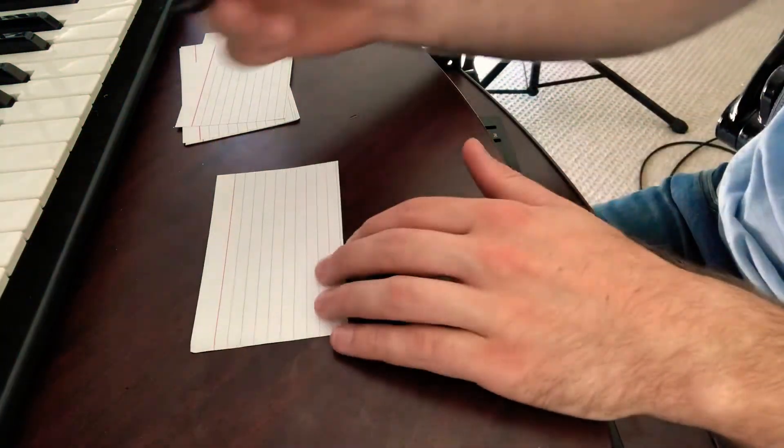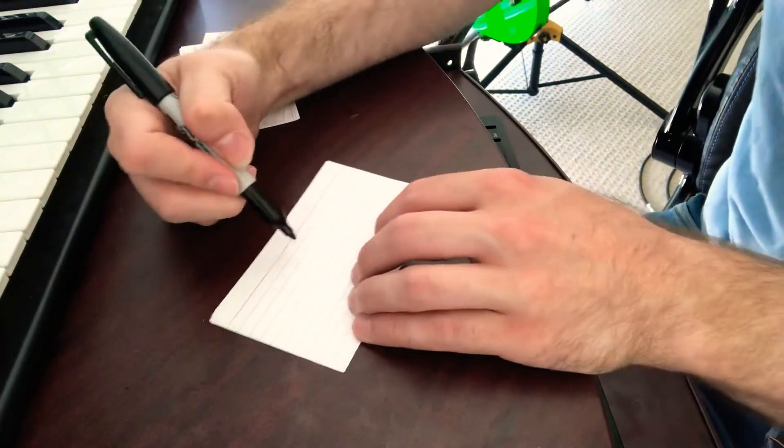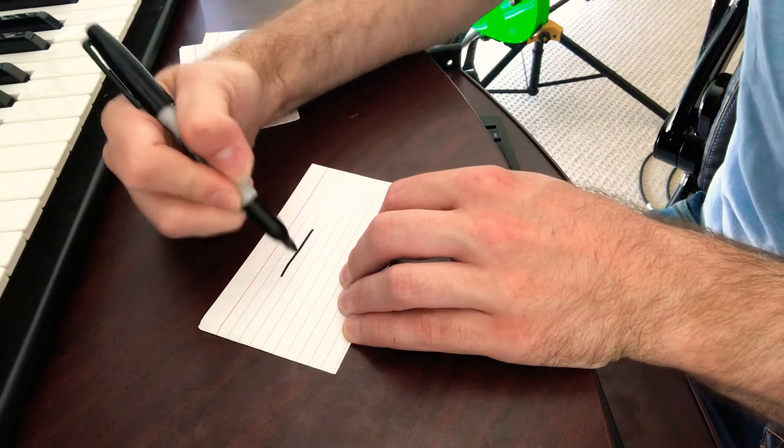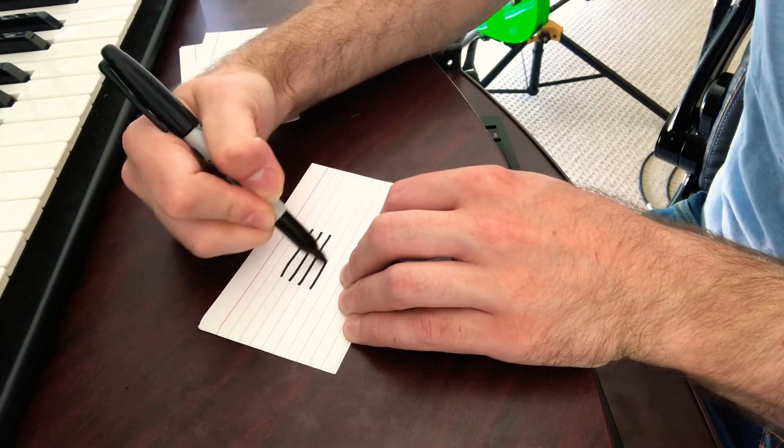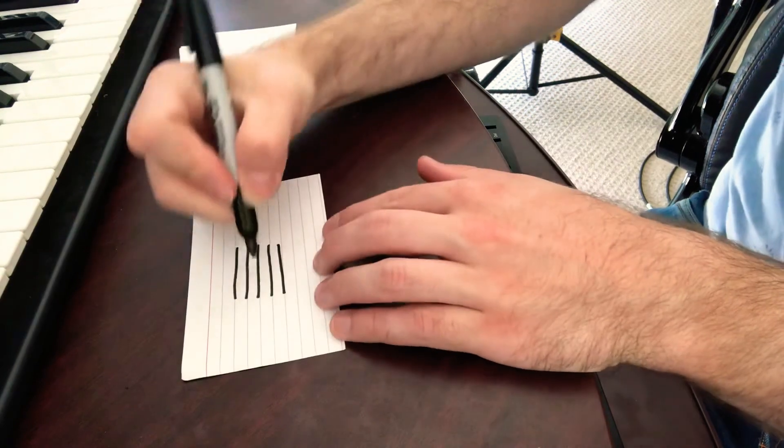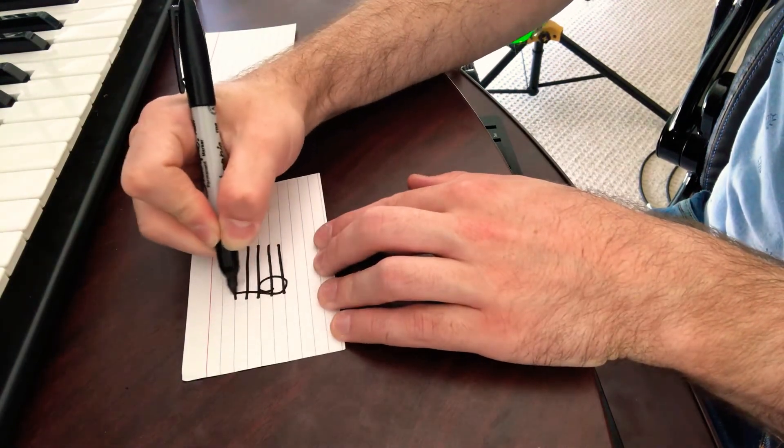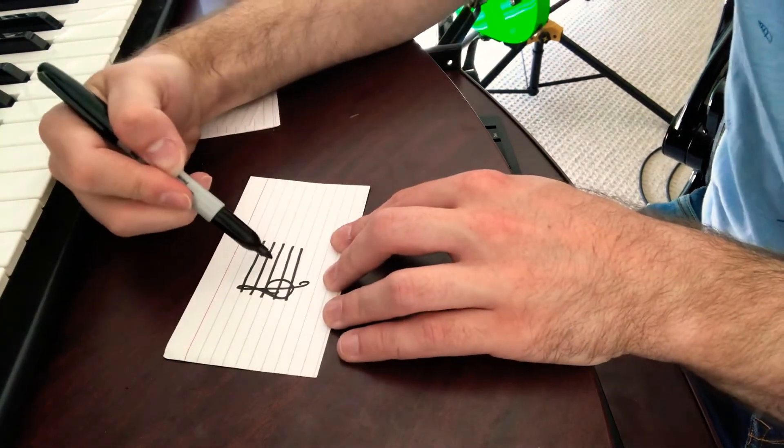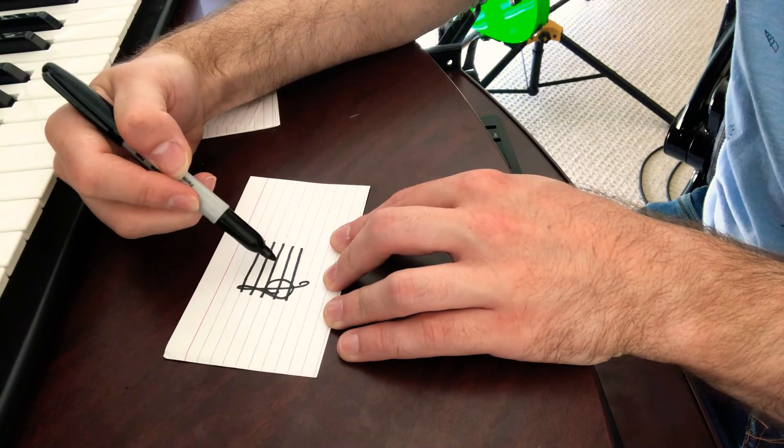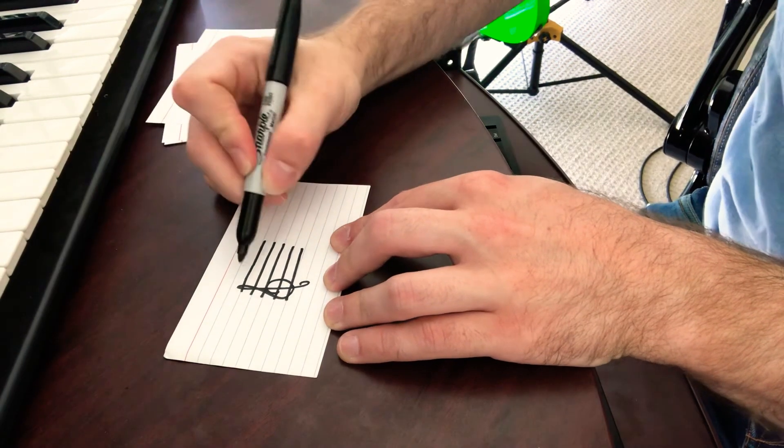You can do the same thing with bass clef. But if you're making these for yourself and you're not familiar with writing down music, what you have to remember is that as soon as you cross this middle line, this B line, that's the last stem that's going to come down.